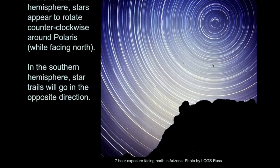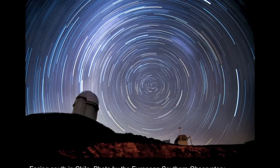In the southern hemisphere, you wouldn't be able to face the north celestial pole — you would face south to see the south celestial pole. If you're facing south in the southern hemisphere, the stars would go the opposite direction: clockwise around the south celestial pole. That's because stars are still rising from the east and moving over to the west. A photograph taken in the southern hemisphere facing south — this one is from Chile — shows that the stars also make arcs centered on the south celestial pole.